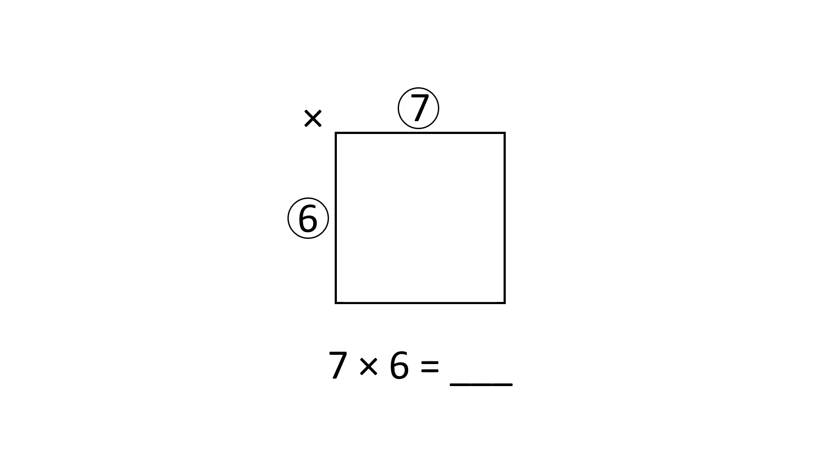If someone doesn't know the product but does understand that 7 can be broken apart, then suddenly this idea can open up. Let's break it apart into 5 plus 2, and now we can consider the smaller parts.